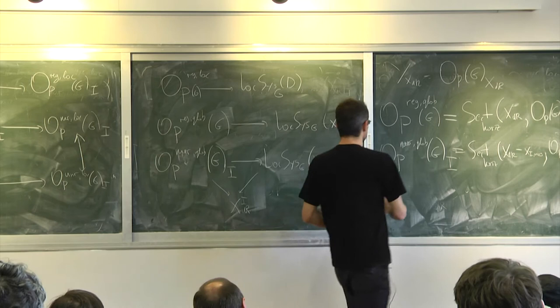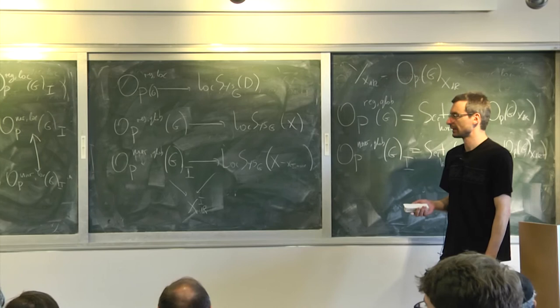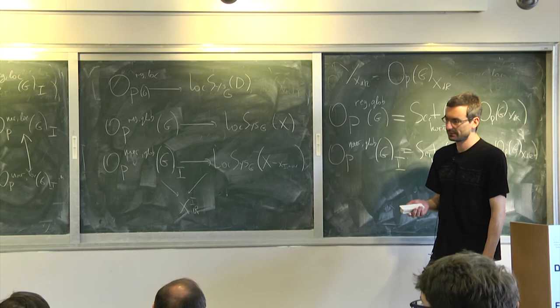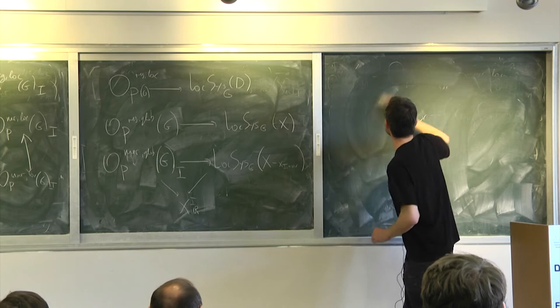A local system is basically a bundle with a connection, right? What's non-obvious is how to construct a bundle — or how to refer you to a connection — but the word 'connection' is forbidden in de Rham geometry. What is the usual connection? Let's go back.